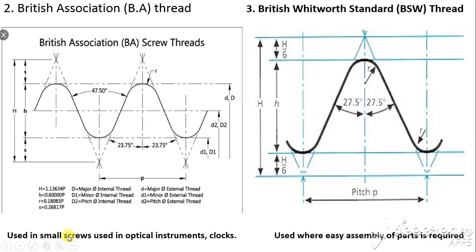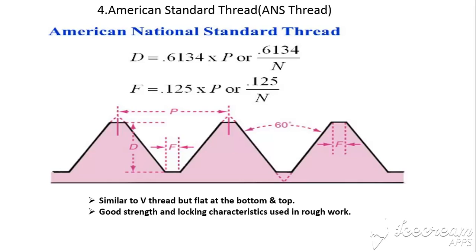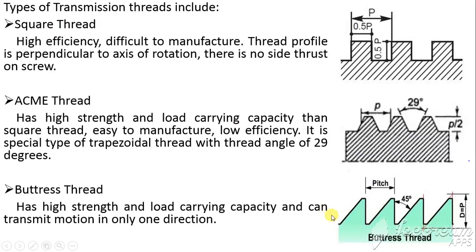The next type of V-thread is the British Association (BA) thread, with an included angle of 47.5 degrees, used in optical instruments, clocks, etc. The third type is the British Standard Whitworth (BSW) thread, with an included angle of 55 degrees, used where easy assembly of parts is required. The last type is the American National Standard (ANS) thread, similar to the V-thread but flat at the top and bottom, with an included angle of 60 degrees. It has good strength and locking characteristics and is used in rough work.